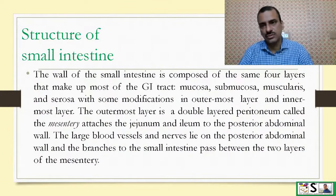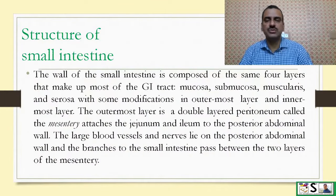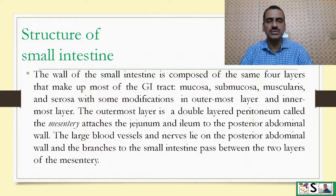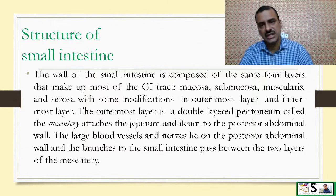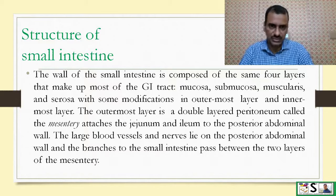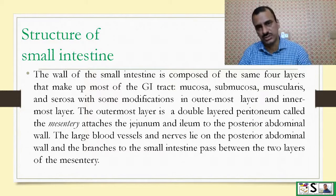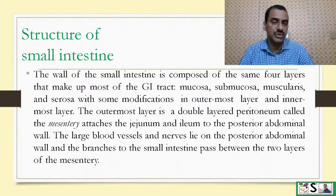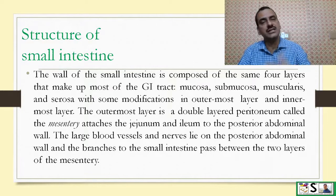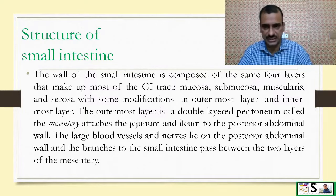Structure of small intestine: the wall of the small intestine is composed of the same four layers that make up most of the GI tract — the mucosa, submucosa, muscularis, and serosa — with some modifications in the outermost layer and the innermost layer.